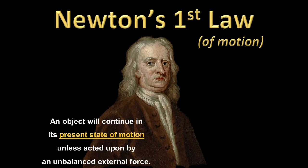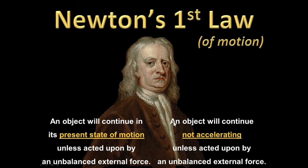We're ready now to formalize inertia into Newton's first law of motion: an object will continue in its present state of motion unless acted upon by an unbalanced external force. That present state of motion means it's not accelerating. Acceleration includes not just going faster, but also going slower and turning. So an object will resist turning, resist going faster, and resist going slower — unless an unbalanced external force, like five newtons in one direction and ten newtons in the other, acts on it.